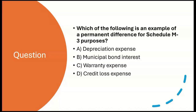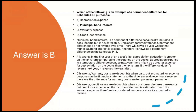Which of the following is an example of a permanent difference for Schedule M-3 purposes? A: Depreciation Expense. B: Municipal Bond Interest. C: Warranty Expense. D: Credit Loss Expense. The answer is B, Municipal Bond Interest — it's a permanent difference because it's included in book income but it's never taxable. Unlike temporary differences, permanent differences do not reverse over time. There will never be a year where municipal bond interest already recorded on the books becomes taxable in a later year. Therefore, Municipal Bond Interest shows as a permanent difference on Schedule M-3.